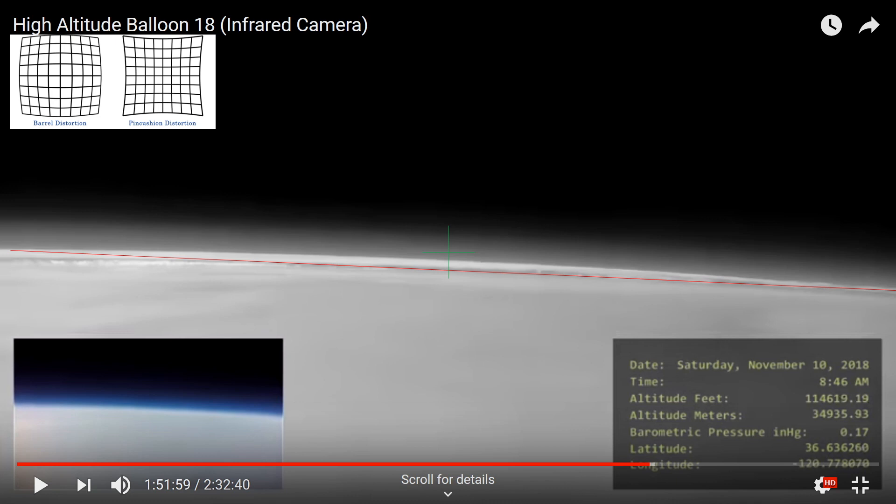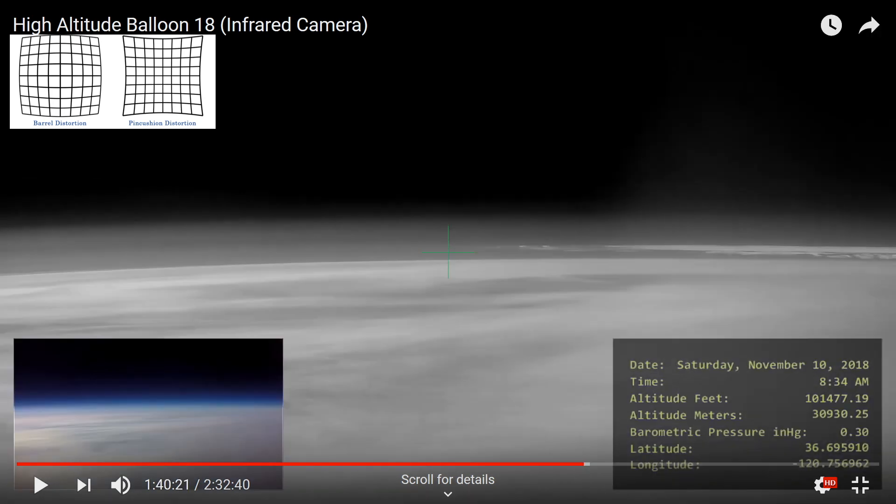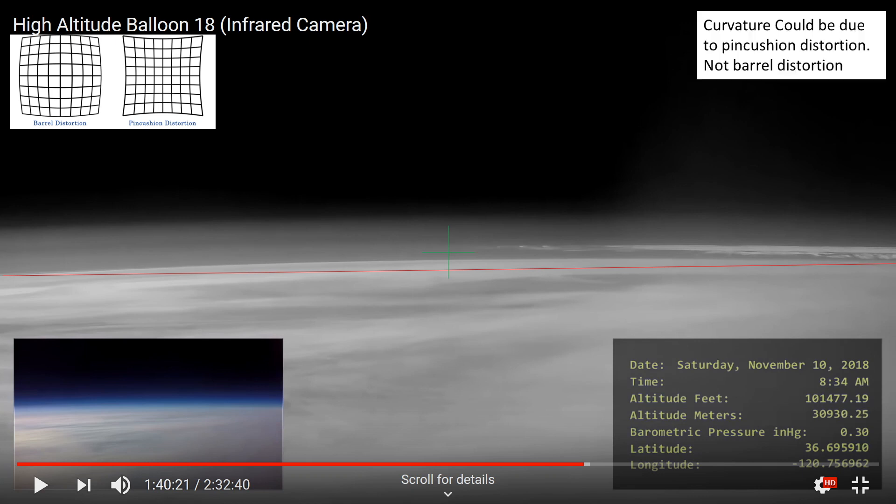Now, this curvature could conceivably be due to pin cushion distortion, or more likely due to a curved horizon. However, what this curvature can definitely not be attributed to is barrel distortion. Now, here's another image where we can draw the same straight line, and we can draw the same conclusion.